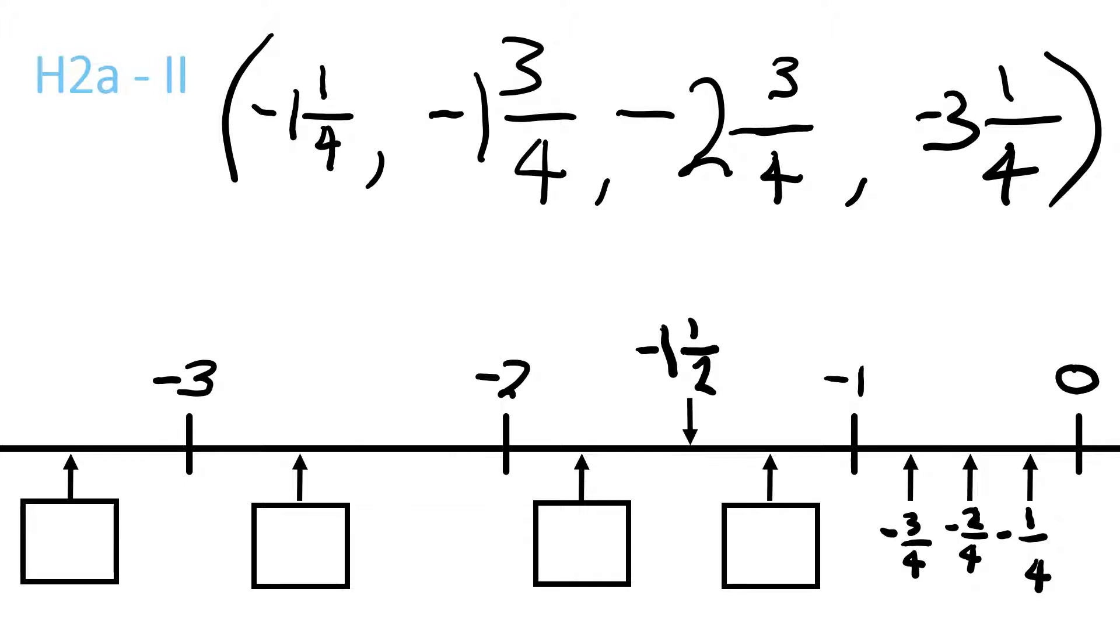Let's start off with negative 1 and a quarter. That would go - we find negative 1 here and then a quarter between negative 2 and negative 1 is about here. So, negative 1 and a quarter.